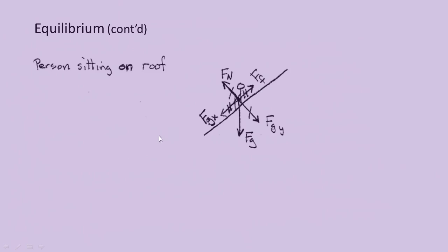Here we have a person sitting on a sloped roof surface. We have the force of gravity straight down. We rotate our axes so that the x-axis is parallel to the roof's surface. The normal force pushes up on the person perpendicular to the roof's surface, along the y-axis. The friction force pushes up on the person parallel to the roof's surface. The gravity force is broken into its x-component, which balances out the friction force, and its y-component, which balances out the normal force. We have balanced forces and no net force — this is static equilibrium, because the person is not moving.